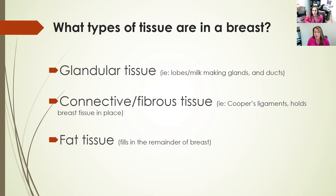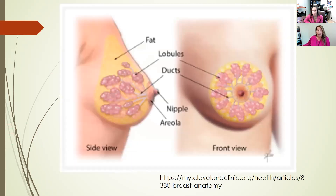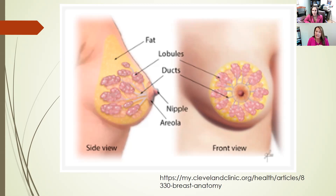There's also the connective and fibrous tissue, such as the ligaments that hold the breasts up, and fat tissue that fills in the remainder of the breast. If you look at this picture, you can see that the yellow area is the fat tissue, and we love fat on mammogram because we can see right through it. These grape-like structures are the glands, the milk-making glands, and you can see the tubes that come from them. All of these create the density of the tissue within your breast and make it more difficult for us to read a mammogram.